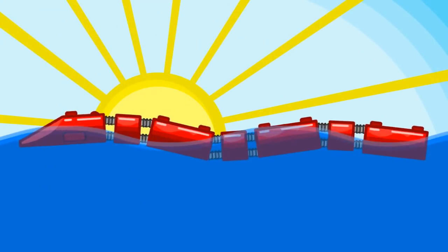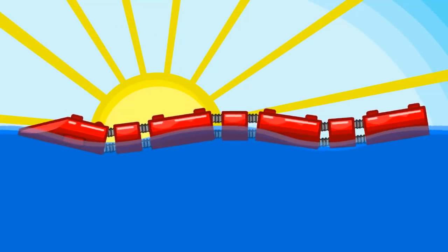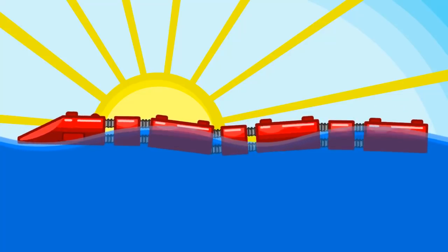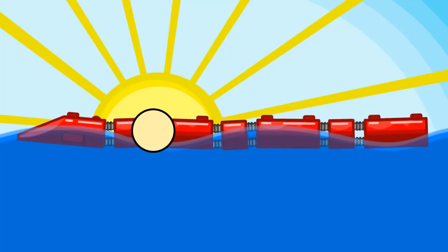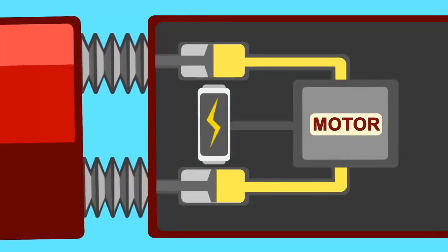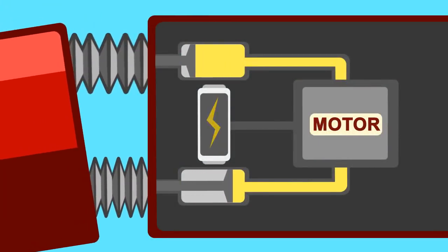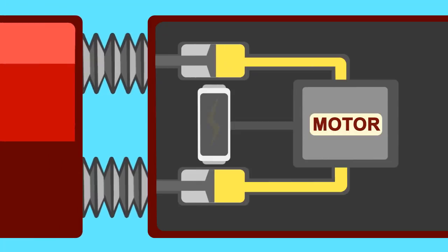The attenuator rig sits upon the ocean's surface, giving it a snake-like appearance. Each section is connected by a joint that allows the attenuator to undulate along each wave. The movement of the wave pushes and pulls hydraulic cylinders, causing fluids to compress into high-pressure accumulators, creating an electrical current.